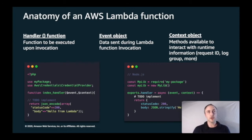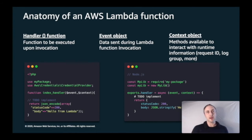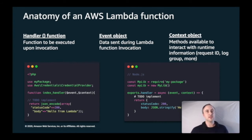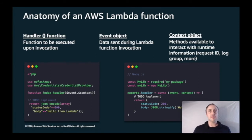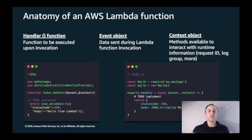The context object contains information about the invocation itself and provides methods that allow you to interact back with the runtime and execution environment. In this example, on the left is the PHP version and on the right is the Node.js version — both have a handler function with the event and context objects passed in. Above the function are the function's dependencies, configuration options, or helper functions — this is where you might initialize database connections or static initialization.